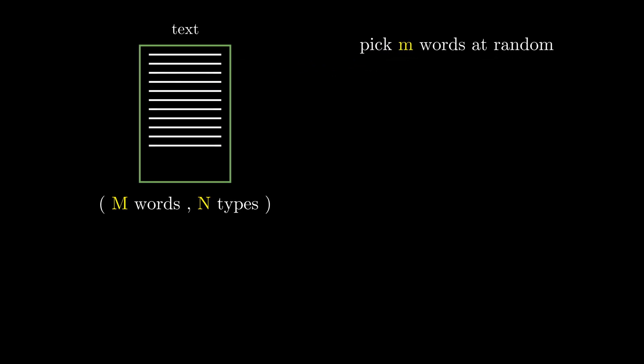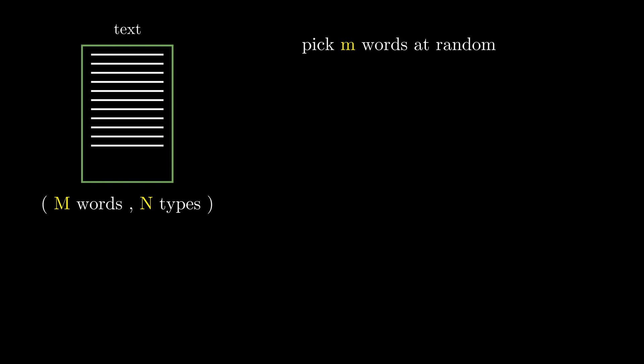Here is the approach we take. Given a text of word length m, and number of types n, let us randomly choose m words from it. What is the expected number of types, i.e. distinct words, that we will find in this sample?